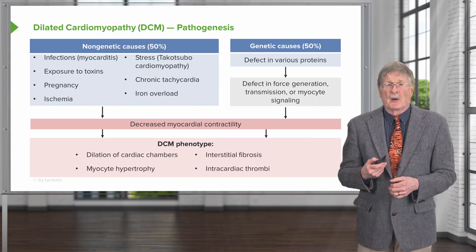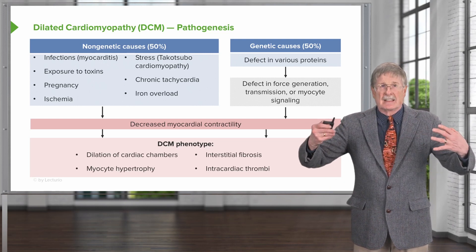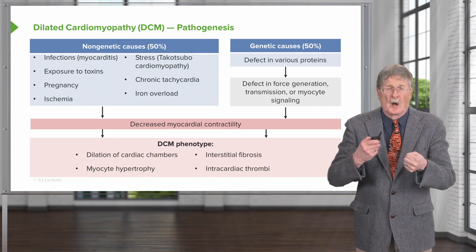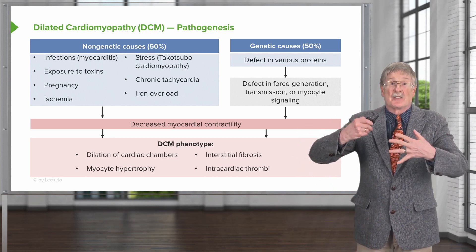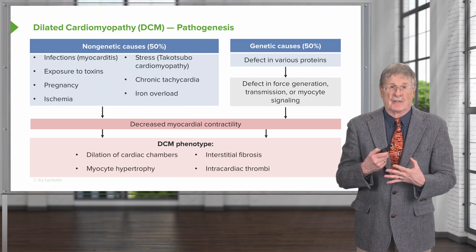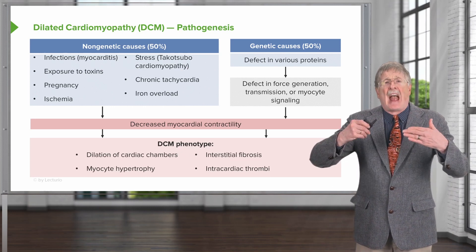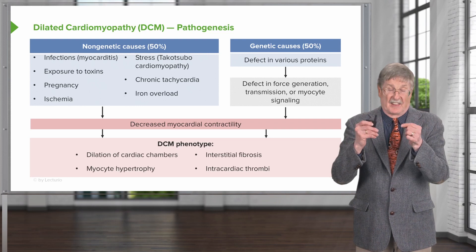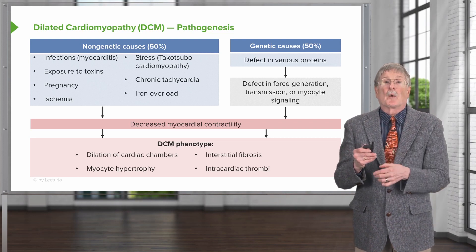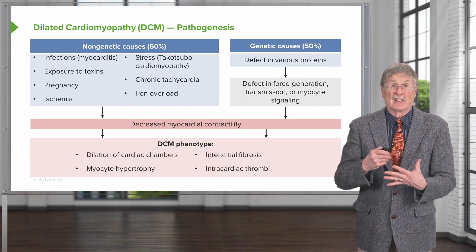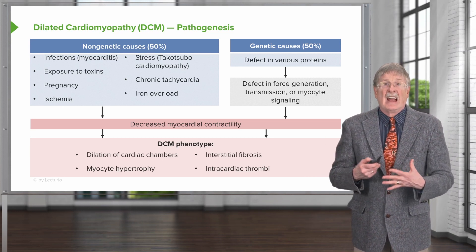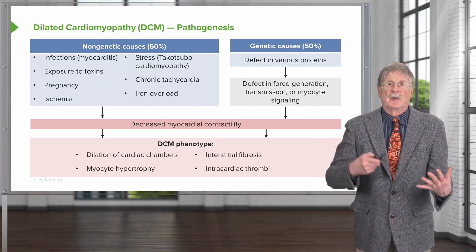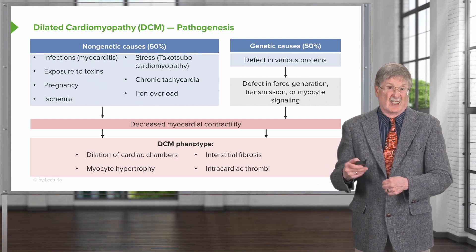Additional features of the dilated cardiomyopathy phenotype include myocyte hypertrophy: as contractility decreases, the heart's adaptive response is to enlarge myocytes to generate stronger contractions. Abnormal volume and pressure stimulate myofibroblasts to lay down increased fibrosis, which further impairs contractility. Because the dilated chambers have diminished blood movement through them, they are prone to developing thrombi that can eventually embolize.